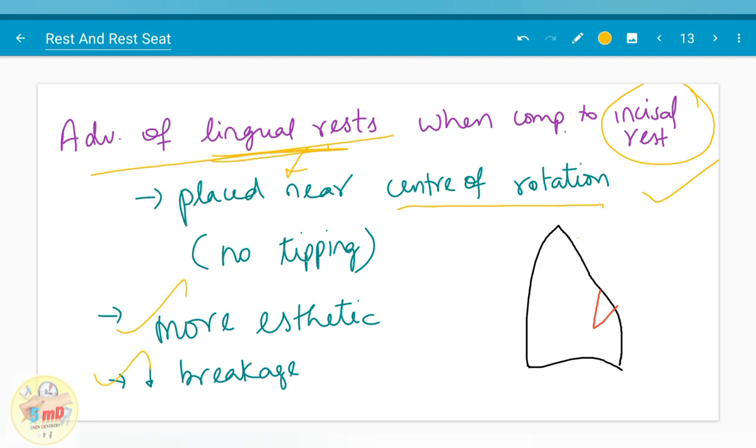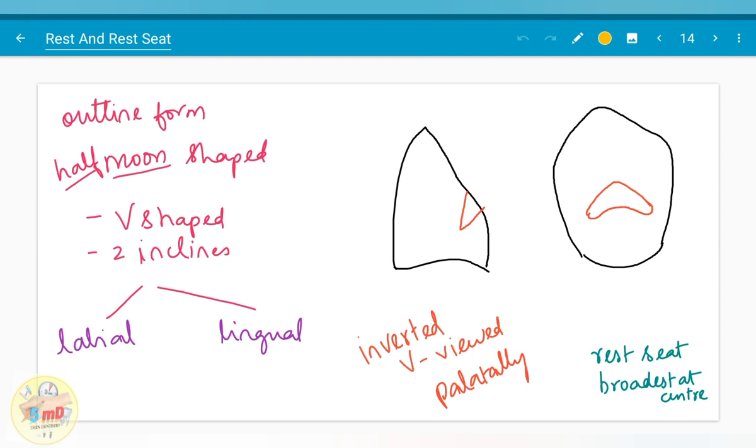Breakage is less. The outline form is half-moon shaped or V-shaped. It has two inclines, labial incline and lingual incline. When viewed palatally, it shows the inverted V-shape appearance. The rest seat is broadest at the center.